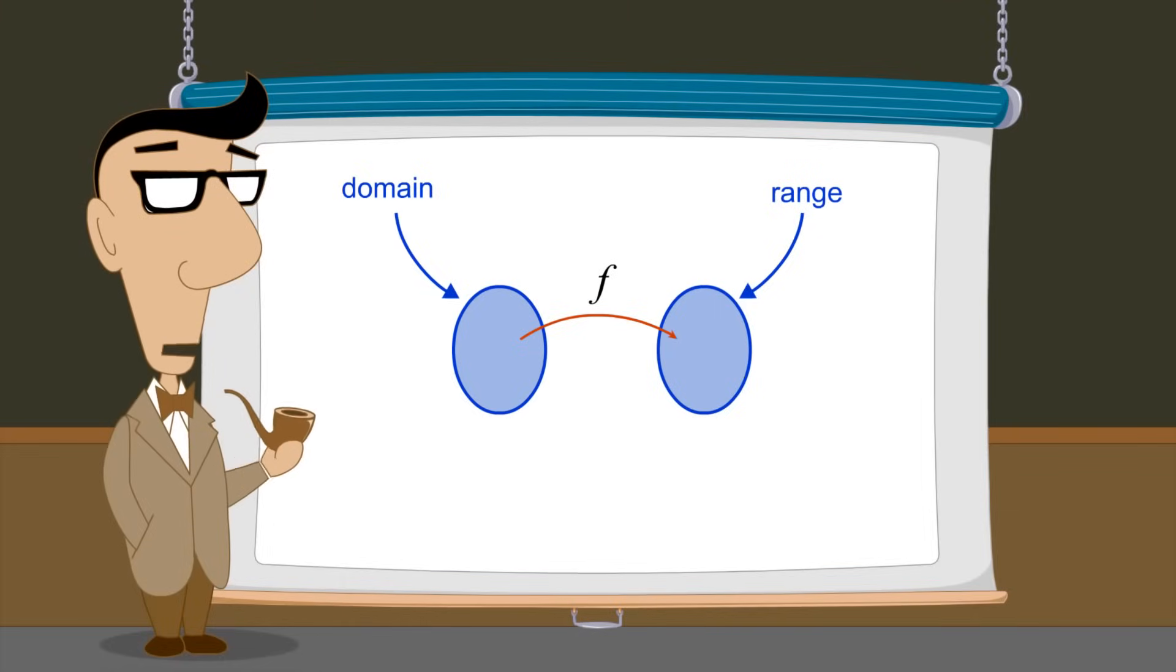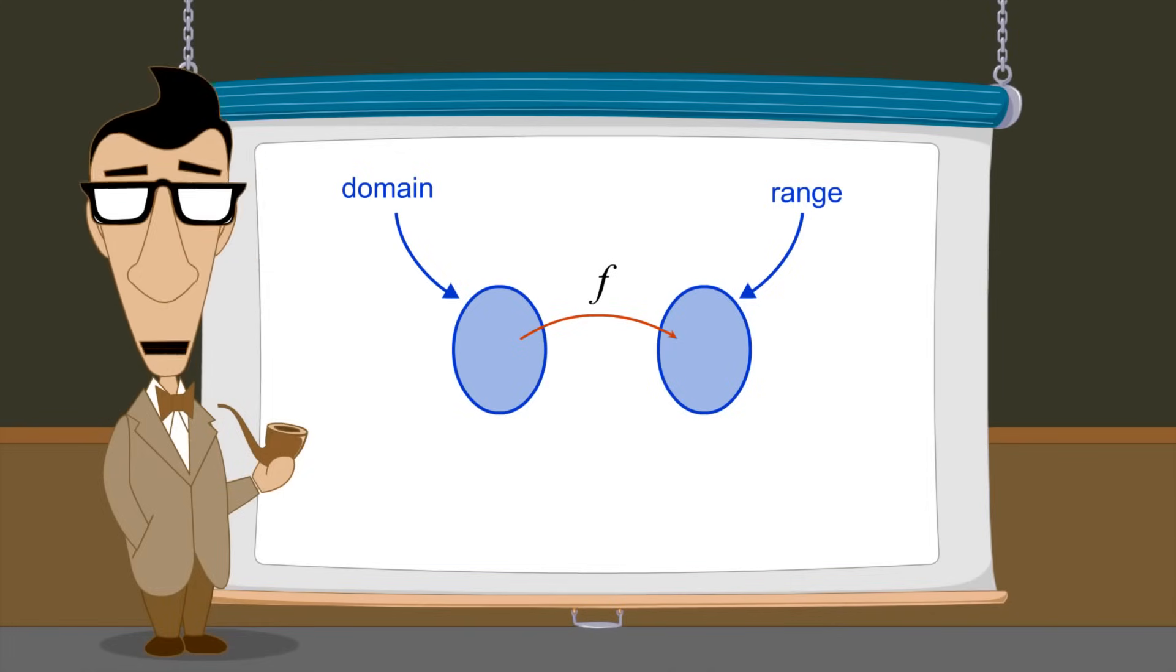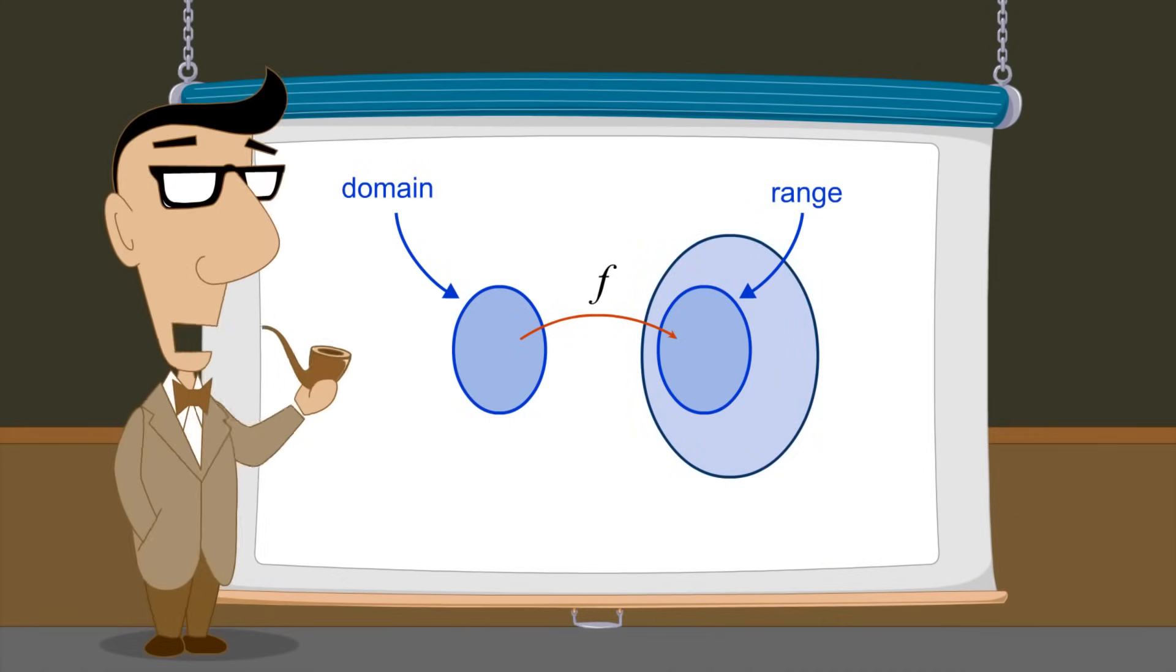Sometimes we don't know exactly what outputs will be produced by a given function, but we do know the general type of outputs which will be produced. In other words, we don't always know the exact range of the function, but we can describe a set which contains this range.